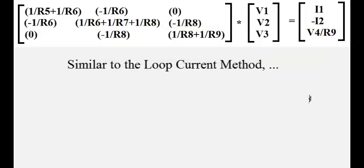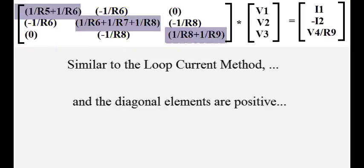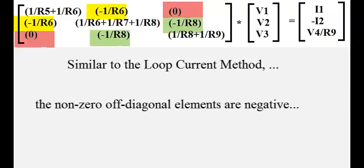Similar to the loop current method, notice the symmetry. Notice the diagonal elements are positive, and the non-zero off-diagonal elements are negative.